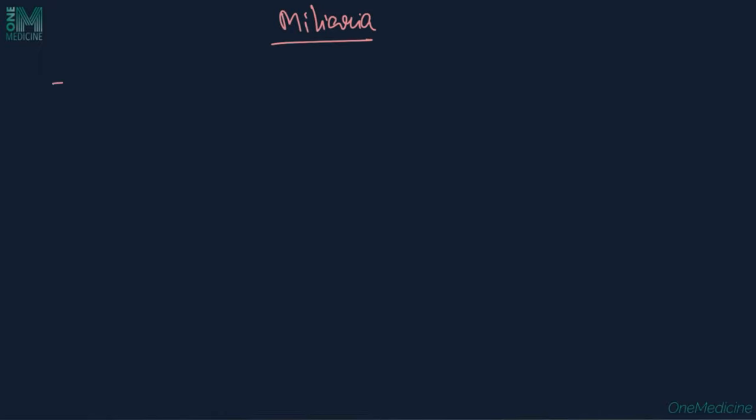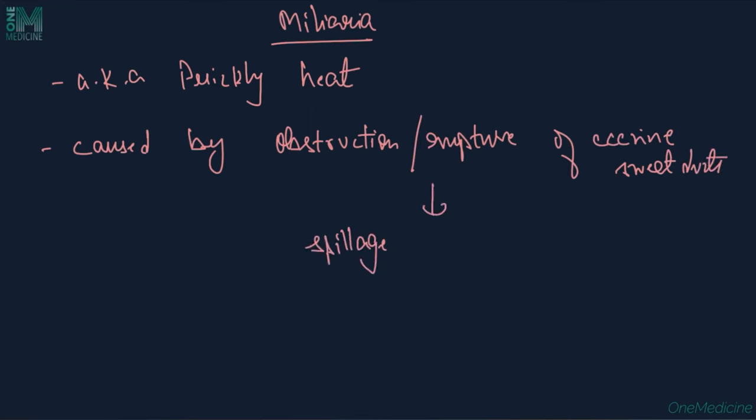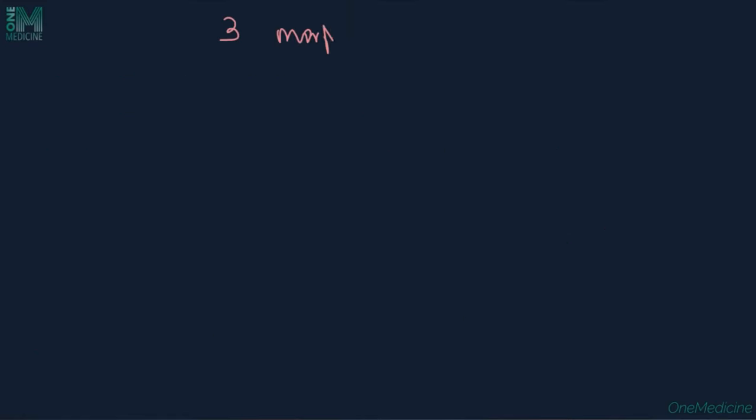Milaria, commonly called prickly heat, is caused by obstruction and rupture of eccrine sweat ducts resulting in spillage of sweat into adjoining tissues. Depending upon the level of rupture, milaria is classified into three morphological types.